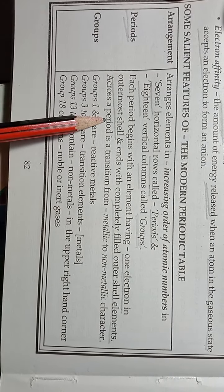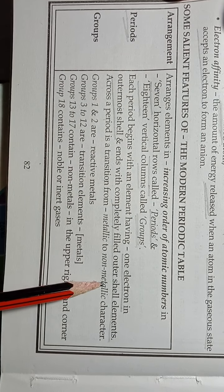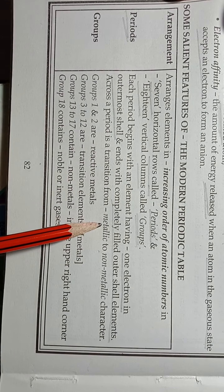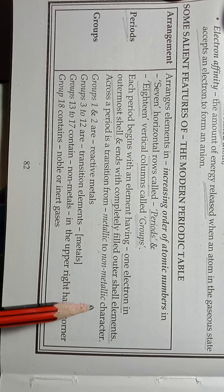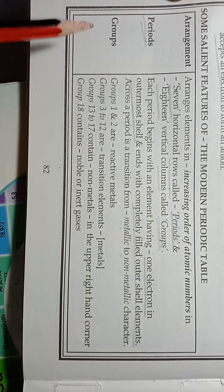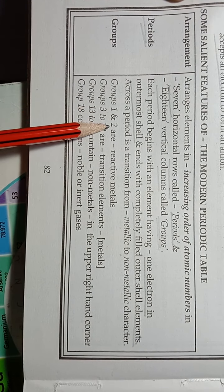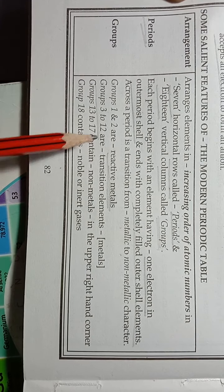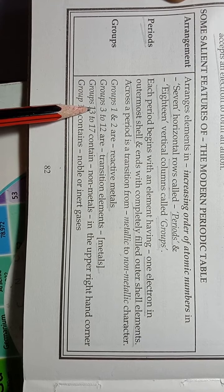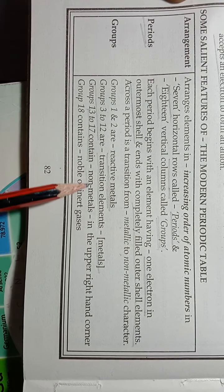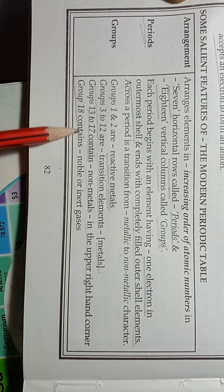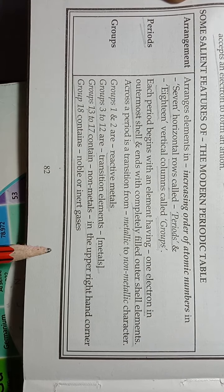Across a period there is a transition from metallic to non-metallic character — from left to right, metallic character decreases and non-metallic character increases. Regarding groups: groups 1 and 2 are reactive metals; groups 3 to 12 are transition elements or transition metals; groups 13 to 17 contain non-metals in the upper right-hand corner; and group 18 contains noble or inert gases.